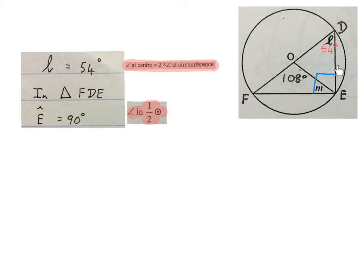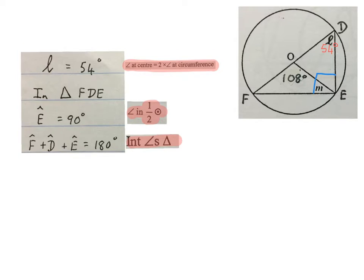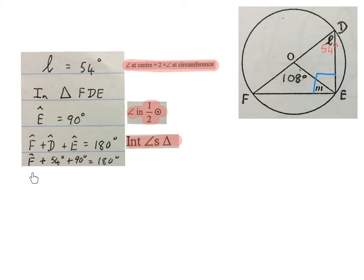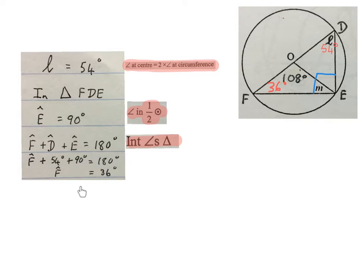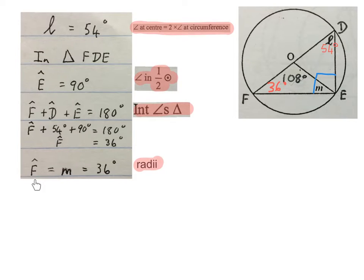I go into triangle FDE. Angle E is 90 degrees — angles in a semicircle. Staying in triangle FDE, angle F plus angle D plus angle E equals 180 — interior angles of a triangle. Substituting: the unknown F plus 54 degrees plus 90 degrees equals 180. Then minus the 54 and 90 from 180, giving us F equals 36 degrees.